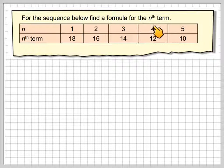Well, the sequence below, find a formula for the nth term. So, I've got n is 1, 2, 3, 4, 5